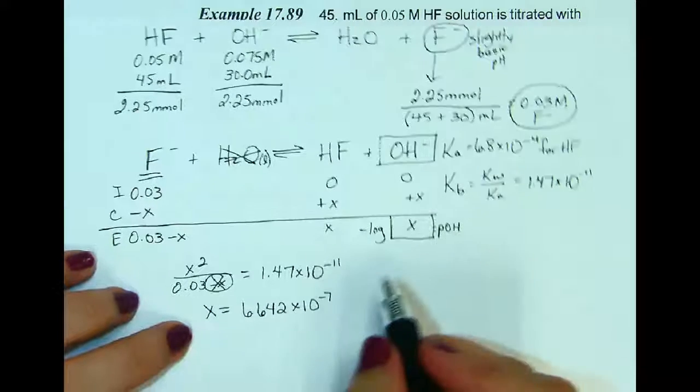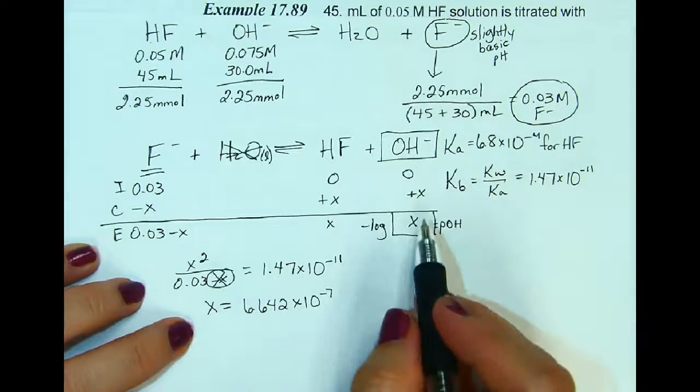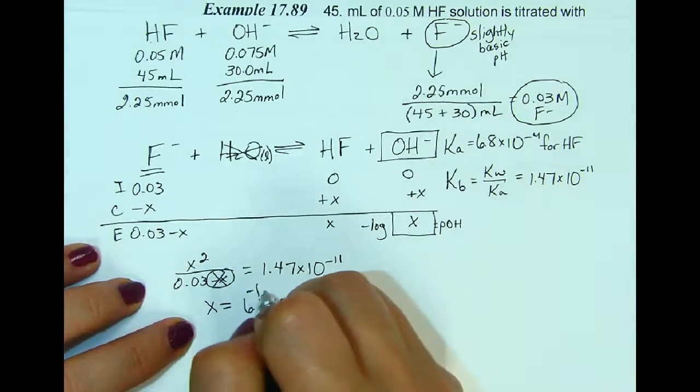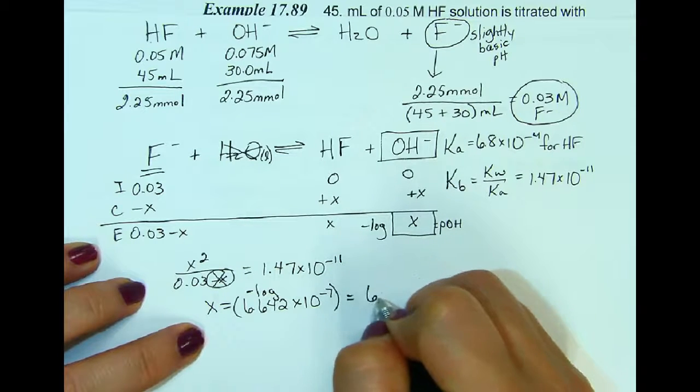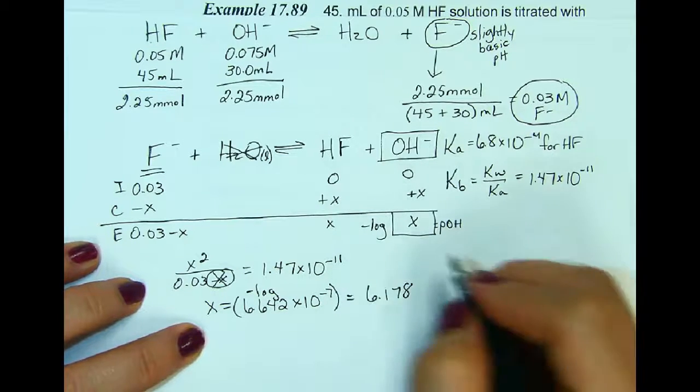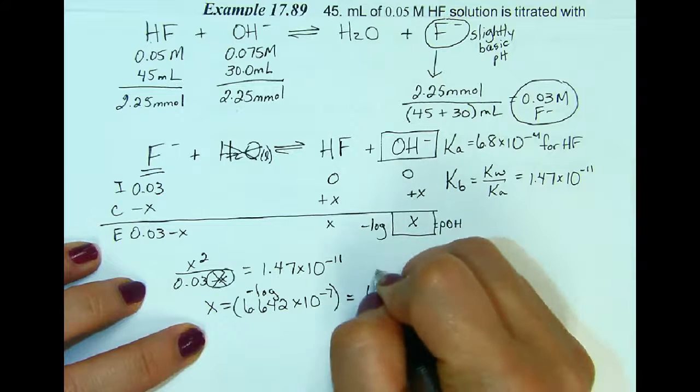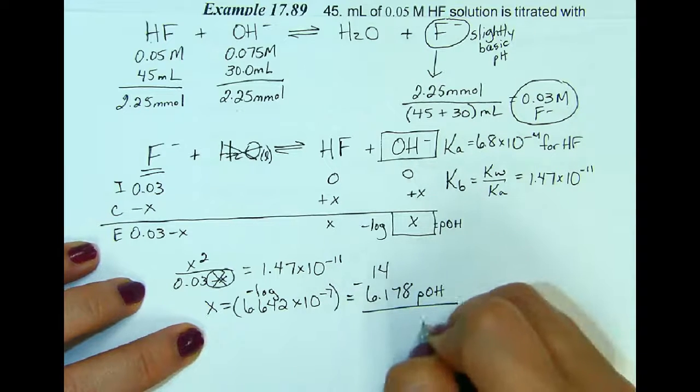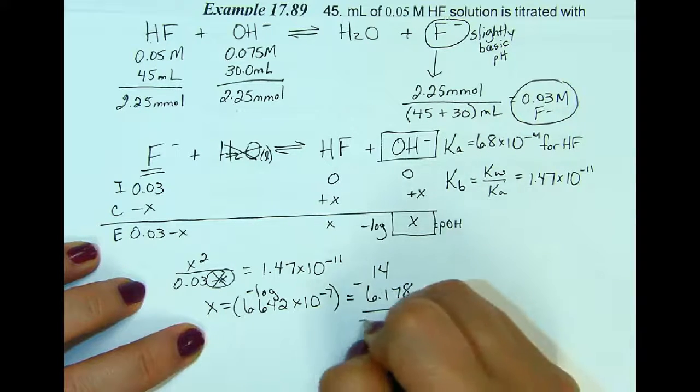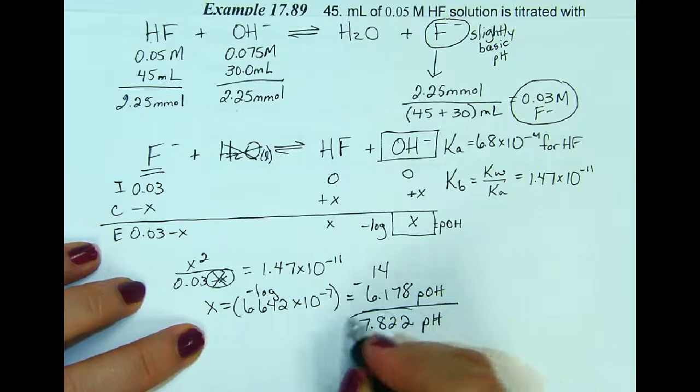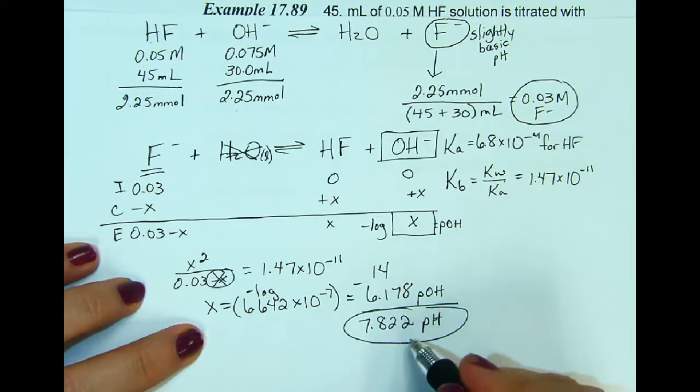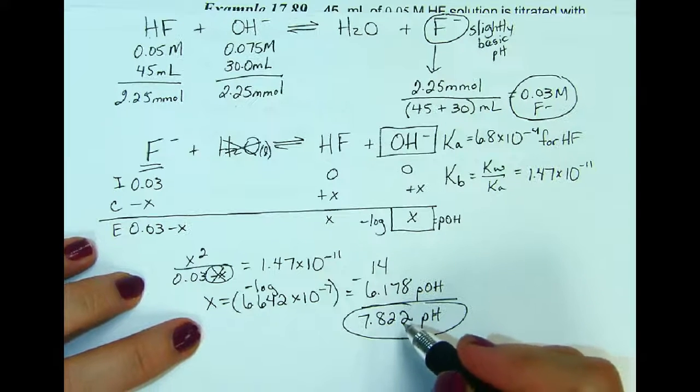Now this is my hydroxide concentration. So if I take the negative log of this value, I'm going to get a pOH of 6.178. And then if I take 14 minus the pOH, then I can get a pH of 7.822. And remember, we're expecting a slightly basic pH, which 7.822 is.